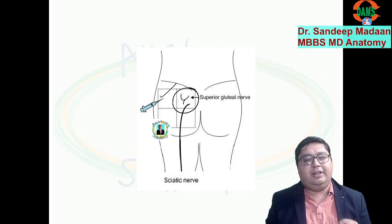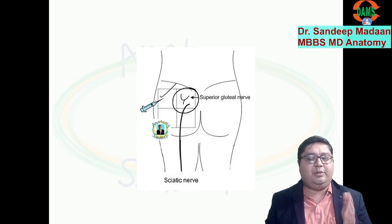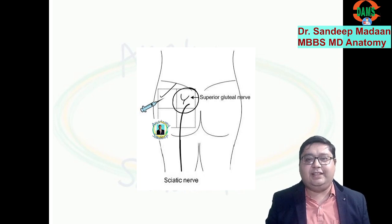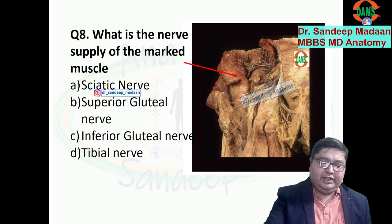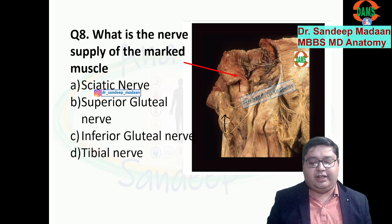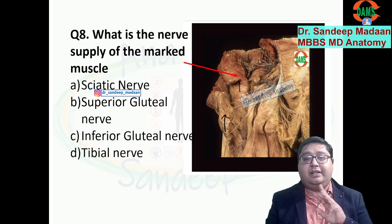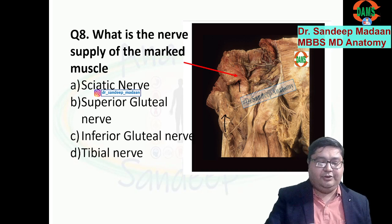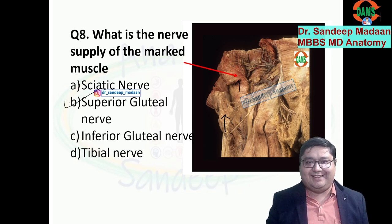This is a very important topic — almost every exam has a question on it. In case of unilateral involvement the gait is called lurching. In bilateral involvement it is called waddling. Now, gluteus maximus has been reflected and gluteus medius is marked. What is the nerve supply? Gluteus medius, gluteus minimus, and tensor fasciae latae — these three have a common nerve supply, superior gluteal nerve, and a common action: abduction and medial rotation.